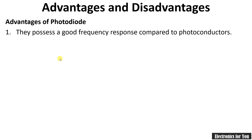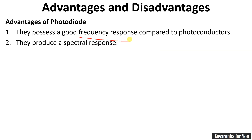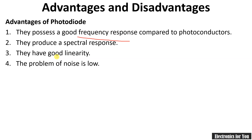The advantages of a photodiode are: it has a good frequency response, meaning its speed is higher; it produces a spectral response; it has good linearity; and the problem of noise is very low.